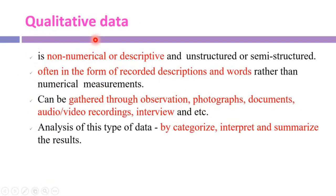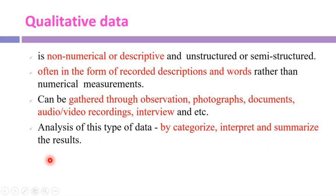Qualitative data is non-numerical or descriptive — recorded in the form of information, descriptions, and words. Qualitative data can be obtained through observations, photographs, documents, audio or video recordings, and interviews, and can be analyzed by categorizing, interpreting, and summarizing results. For example, investigating what factors affect stress among academic staff produces qualitative data because it is descriptive and gathered through interviews.